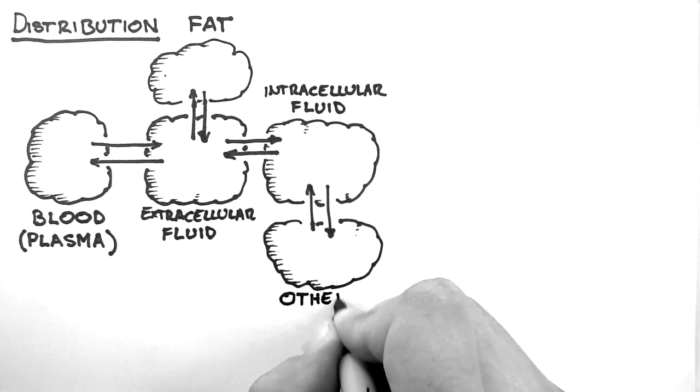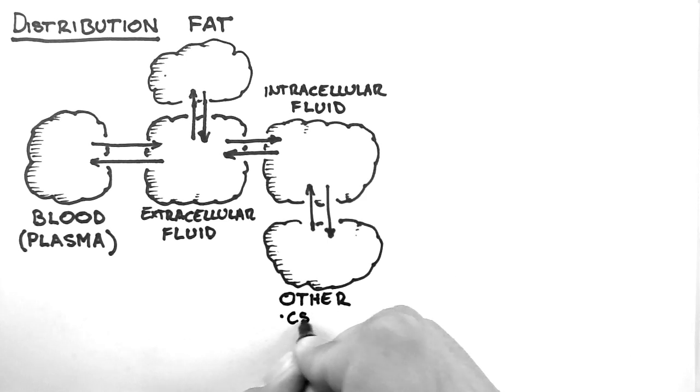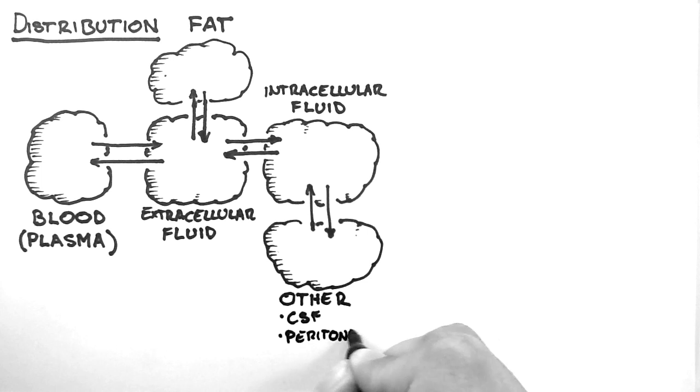Then there are numerous other minor compartments. These include the cerebral spinal fluid, the peritoneum, synovial fluid in joints, and the fetus in pregnancy. There are numerous others, but for the purposes of this tutorial, we'll consider these as one single compartment.